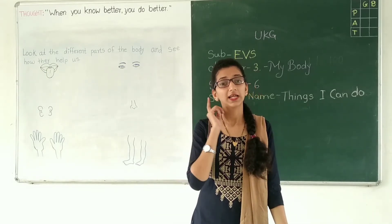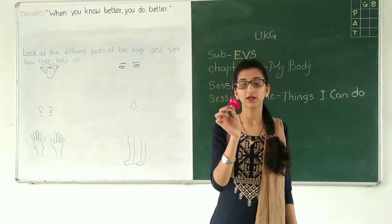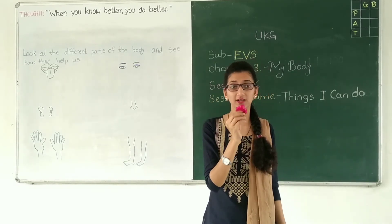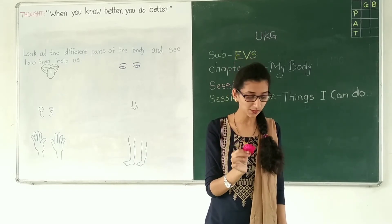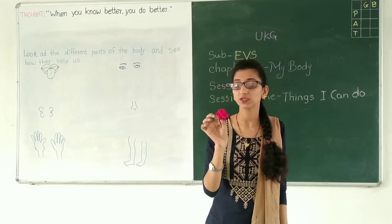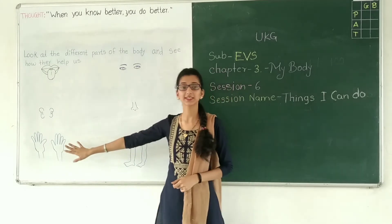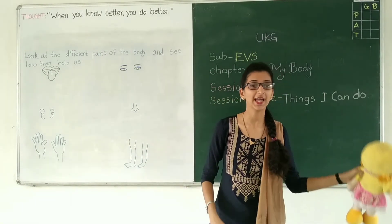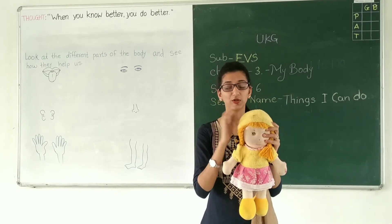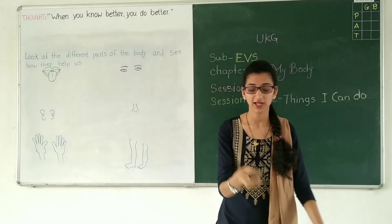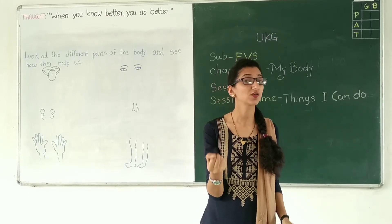Now the fourth is nose. I have one flower. Now I am going to take a smell of this flower. This smell is so nice. Now next is hands. I have one doll — this doll is so soft. I can feel this. Why? Because of my hand. I have one more object — I have one stone. This stone is so hard. I can feel this. Why? Because of my hand.